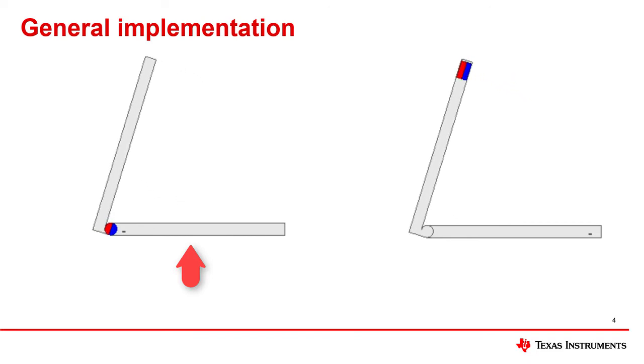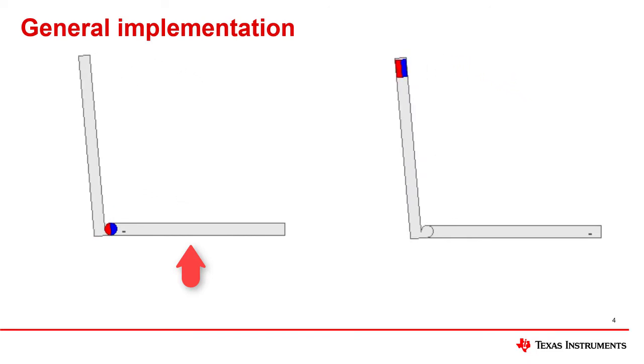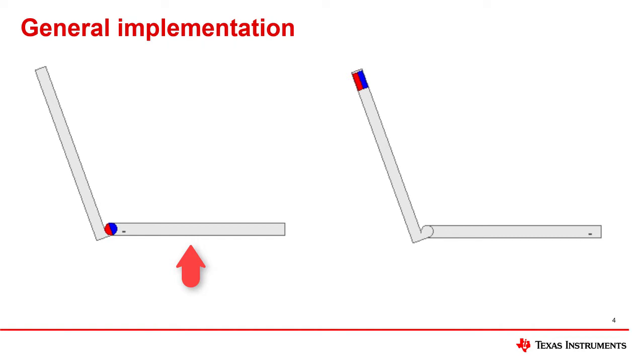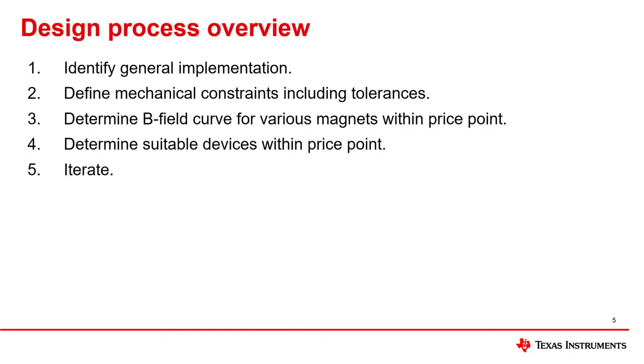Or you could possibly use a block magnet placed toward the extremity of the moving part to trigger the Hall effect sensor. Deciding which implementation is best for your design will largely depend on space constraints. In this video, we will work through the second example that is shown on the right, which uses a block magnet.